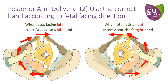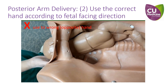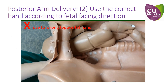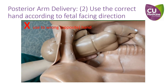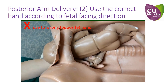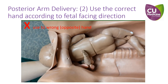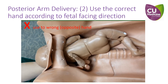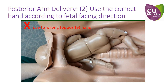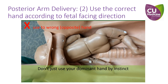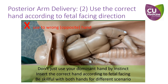Insertion of the wrong hand leads to poor access and incorrect rotation. Once the wrong hand is inserted, maneuvering your hand from the fetus's back to the fetus's front is difficult. If delivery is attempted in such a way, the risk of humeral fracture would be greatly increased. Remember, don't just use your dominant hand by instinct. Insert the correct hand according to which way the fetus is facing, and be skilled with the use of either hand to facilitate different scenarios.